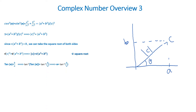Now, if we look at the graph to the right, tan theta is equal to b divided by a. If we take the inverse tan of both sides, we get inverse tan of tan of theta is equal to inverse tan of b divided by a, which reduces to theta is equal to inverse tan of b divided by a.